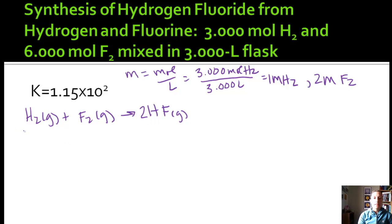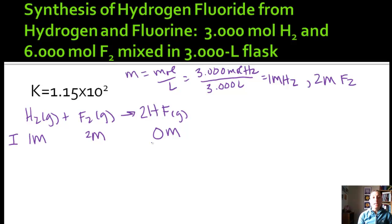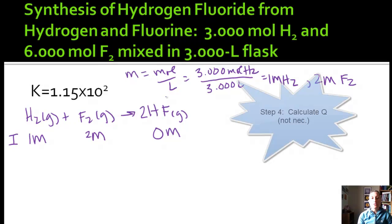We need to balance it. So we need a two right here: H2 + F2 → 2HF. Let's write down our initial concentrations. We know we are starting with one molar of H2 and two molar of F2. We're assuming zero molar of HF. Because there's no initial concentration of hydrogen fluoride, this means that the reaction will proceed to the right towards the products. And so there's no need to calculate Q. In this case, we already know the direction of shift.